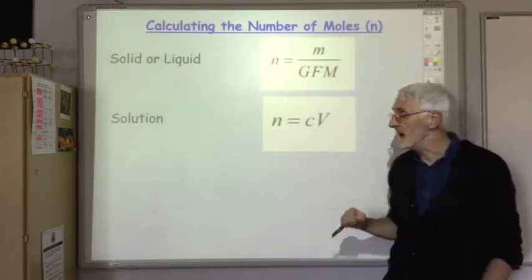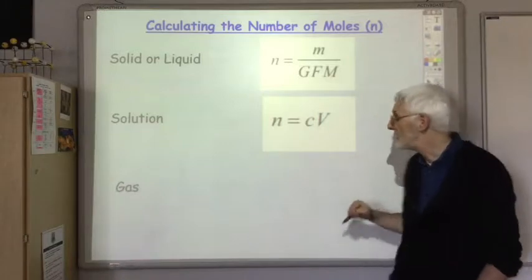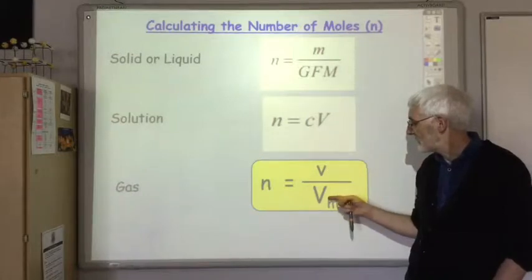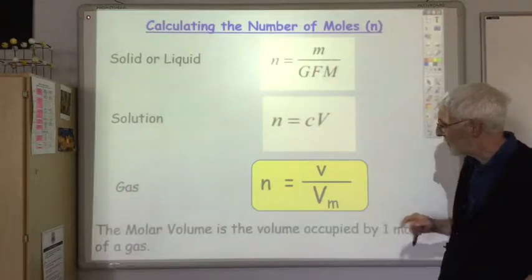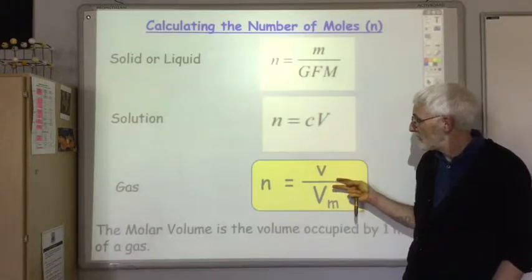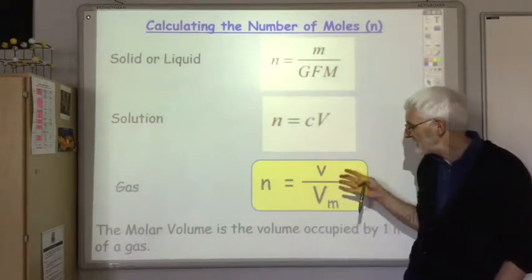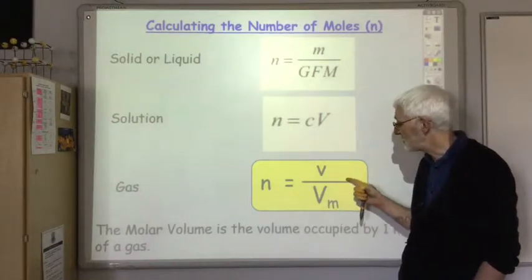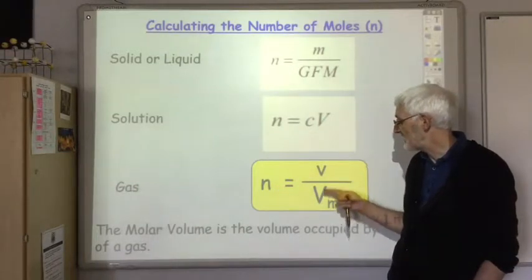We needed all that in National 5. However, if it's a gas, you need to use a new equation: number of moles equals the volume of gas divided by the molar volume. The molar volume is the volume occupied by one mole of a gas. This equation is highlighted because it is the only equation you need in Higher Chemistry that is not given in the data booklet — so make sure you learn it.